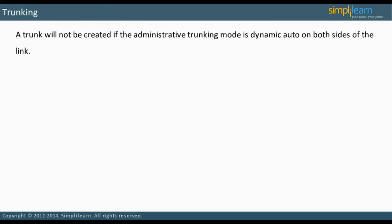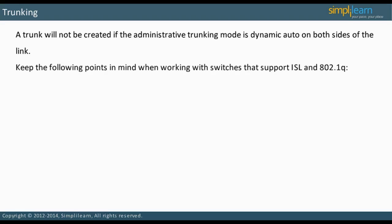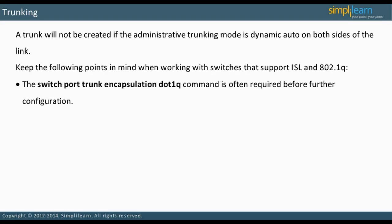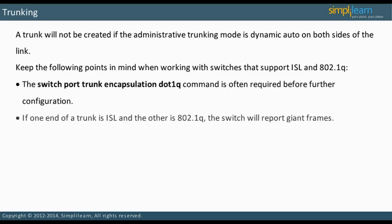If trunking is not occurring as expected, check the DTP modes on the link. A trunk will not be created if the administrative trunking mode is dynamic auto on both sides of the link. There are two points to keep in mind with switches that support ISL and 802.1Q. The switchport trunk encapsulation dot1Q command is often required before further configuration. Also, if one end of a trunk is ISL and the other is 802.1Q, the switch will report giant frames.